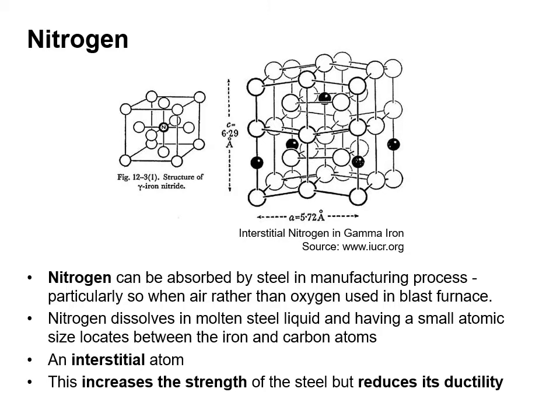Nitrogen can be absorbed in the steel-making process, particularly when air rather than oxygen is used in the blast furnace. Nitrogen dissolves in molten steel and, having a small atomic size, locates between the iron and carbon atoms, creating an interstitial atom. This increases the strength of the steel but reduces its ductility.